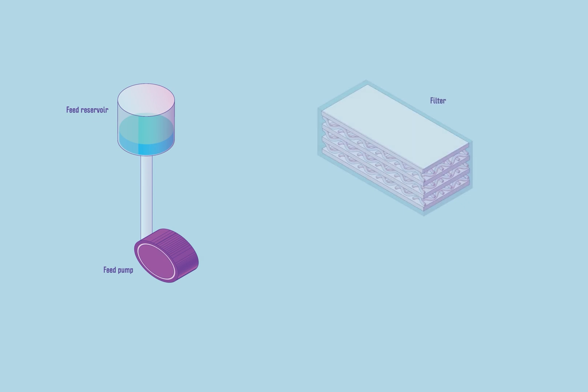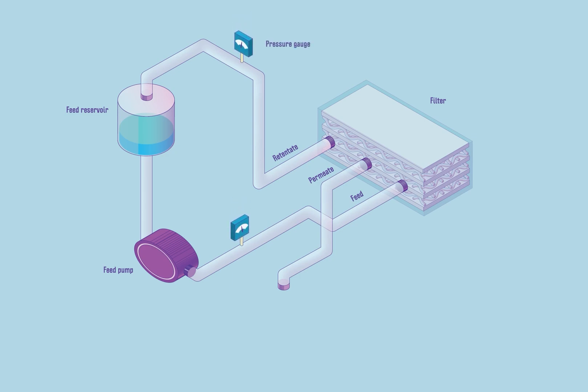A typical TFF configuration consists of the following components: a feed reservoir, feed pump, filter, feed, retentate and permeate lines, pressure gauges to make sure the system stays at the correct pressure, and a vessel to collect the permeate.